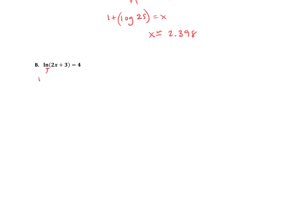So there's our base e, 4 is our exponent, and this 2x plus 3 is the result. So that's how log form is structured. If we put it into exponent form, we have our base e raised to the exponent 4 equals the result 2x plus 3.